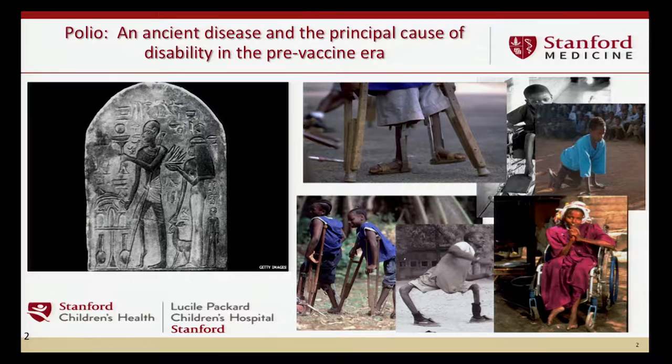I wanted to highlight today some work that I've done over the last couple of decades in this area, and really to highlight the areas that viral experts have been able to bring to the table to help us as molecular epidemiologists try to take information forward in the field. Polio, despite what we don't see here in the U.S. and the Western world, is actually an ancient disease, seen since two to three millennia ago, and was the principal cause of disability in the world in the pre-vaccine era.